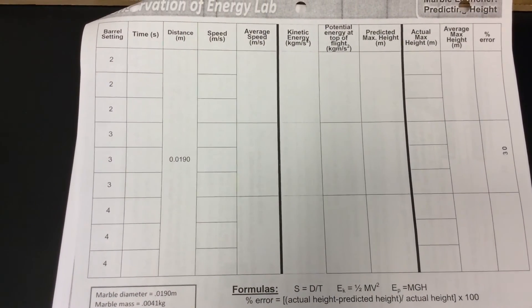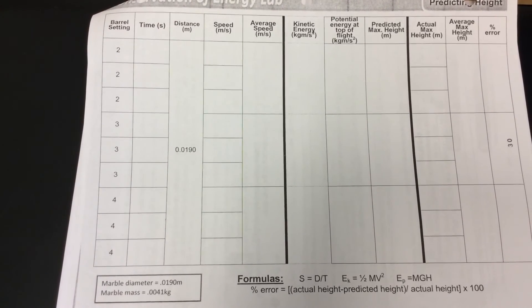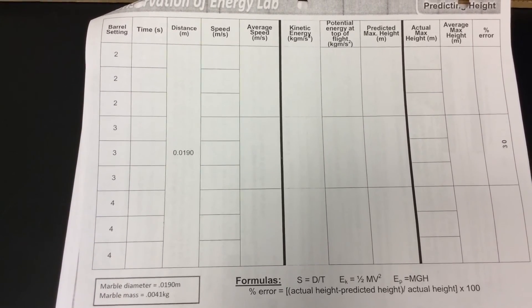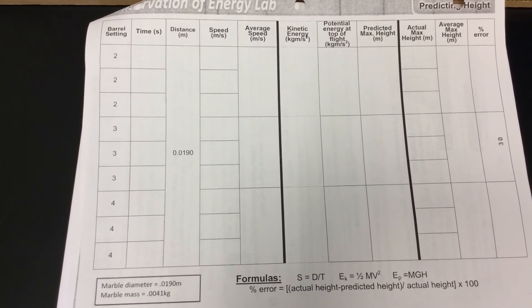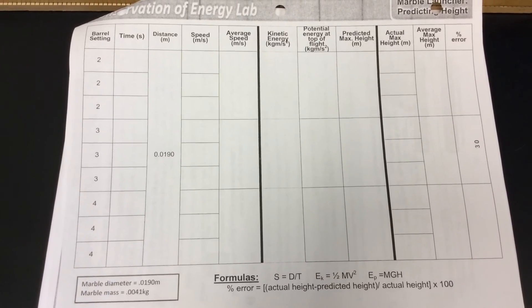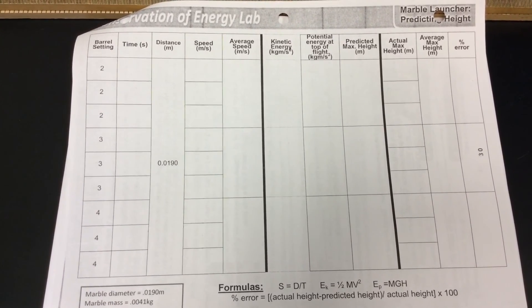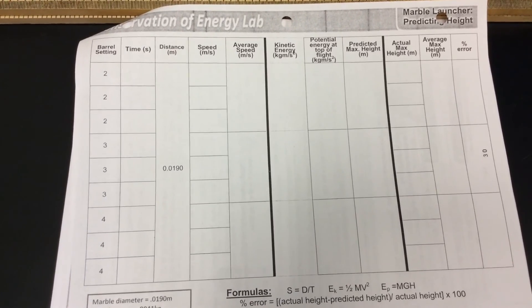So for this lab what we're going to be doing again is launching the marble horizontally, figuring out the speed of the marble, then we're going to be calculating kinetic and potential energy to be able to predict the height of the marble when it's shot straight up in the air. The purpose of this lab really is to take a look at the conservation of energy.